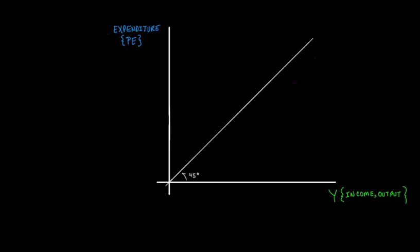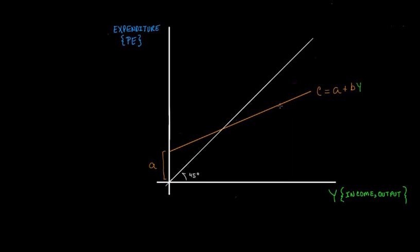Starting with the most basic expenditure category — consumption, shown by the orange line — it is a combination of a couple of things. Even if there were zero income in the economy, there would still be some consumption, which we call A, the autonomous level of consumption. This is subsistence consumption: what households need to survive even at zero income. As income grows, consumption grows, but the slope of the consumption line is less steep than the 45-degree line, so consumption grows at a rate less than one-to-one.